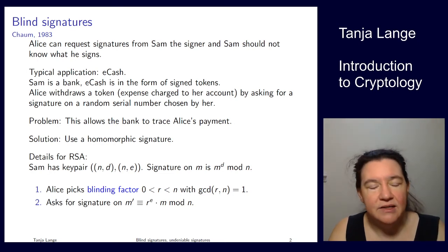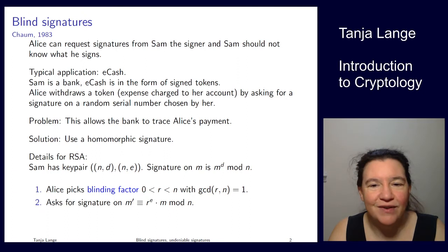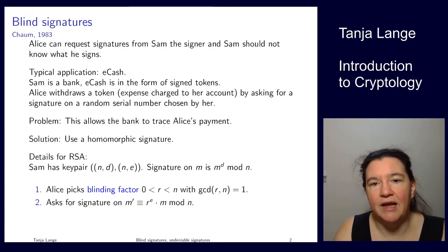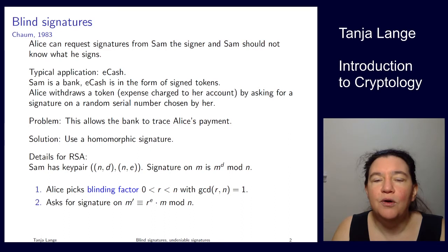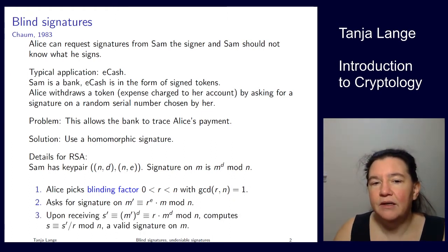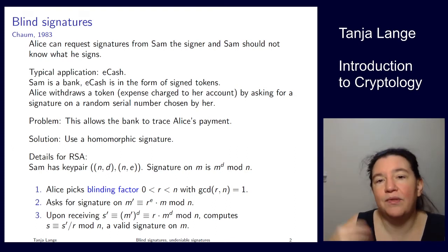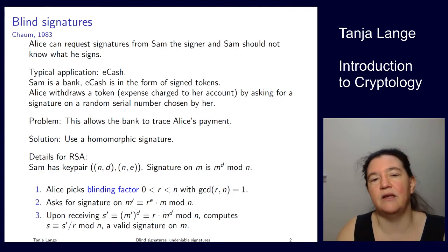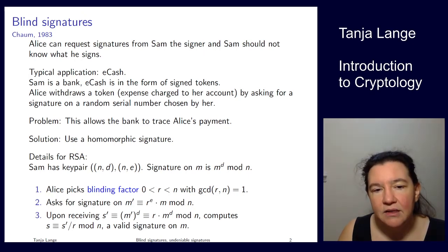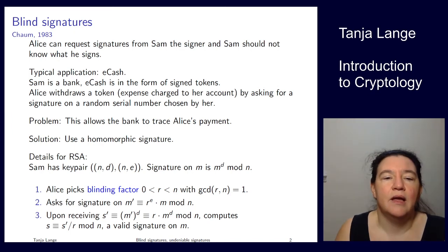What Alice does is basically perform the attack outlined before, but now as a constructive feature. She fixes a random blinding factor r, co-prime with n. She asks for a signature on the blinded message m' = r^e · m. When Sam signs m', he gets r^(ed) · m^d = r · m^d. Alice knows r so she removes it, dividing the blinded signature s' by r to get a valid signature s = m^d.